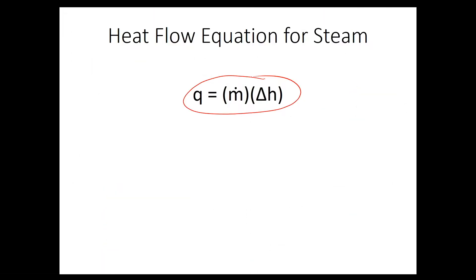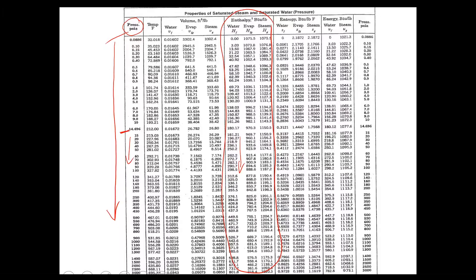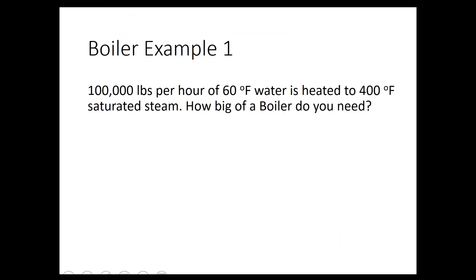Now let's review the heat flow equation for steam, which incorporates those enthalpy values. The equation is Q equals ṁ times ΔH. It's very similar to the equations in the HVAC section, though I think the steam tables applications are actually easier than the psychrometric chart because you have fewer variables and enthalpy values are simpler to look up.